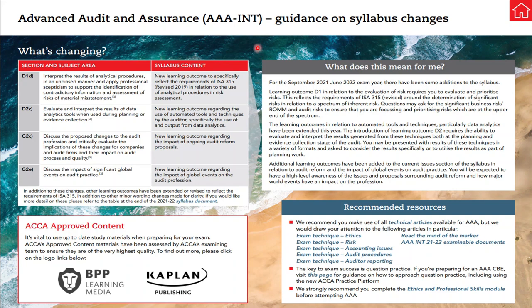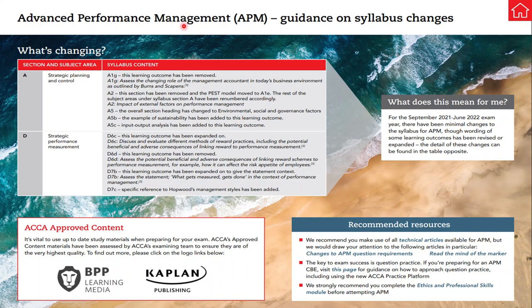Next, let us see what changes are being introduced in the Advanced Performance Management exam. As you can see on the screen, the subject areas where changes are being introduced are strategic planning and control and strategic performance measurement. For the September 2021 to June 2022 exam year, there have been minimal changes to the syllabus of Advanced Performance Management, though the wording of some learning outcomes has been revised or clarified.